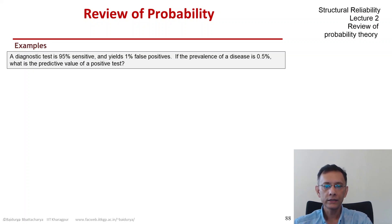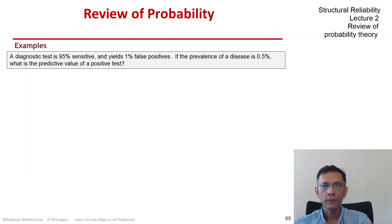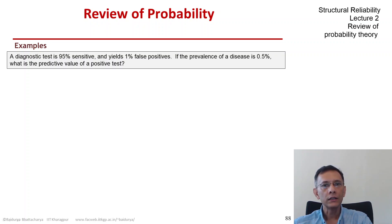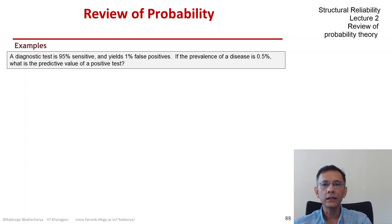The last example in this series on joint probabilities concerns non-destructive tests. Although the problem is presented in terms of medical tests, the logic would hold for any non-destructive test with binary outcomes. So let's understand the terms systematically.